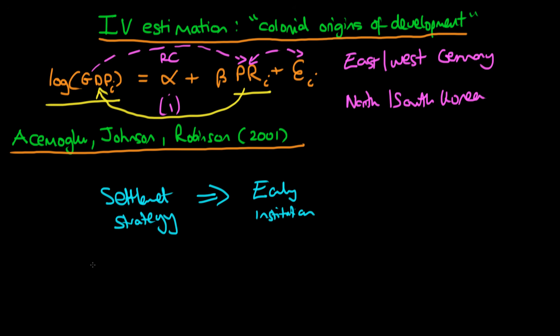The settlement strategies we might be thinking about are what they call extractive strategies for some regimes. You can think about the extractive nature of the Belgian occupation of Congo, where they went and extracted natural resources and actually enslaved the local people. There weren't many early institutions built there.